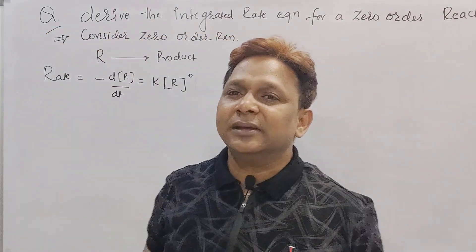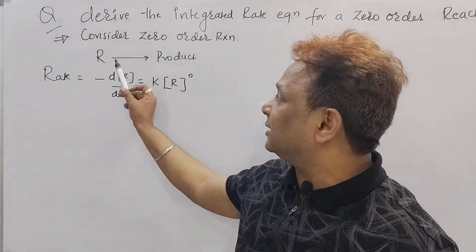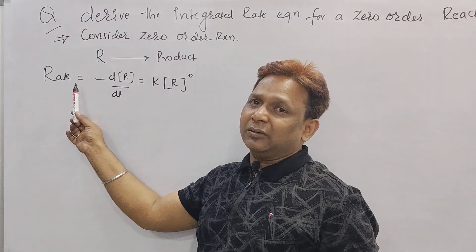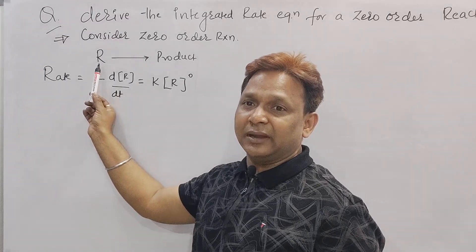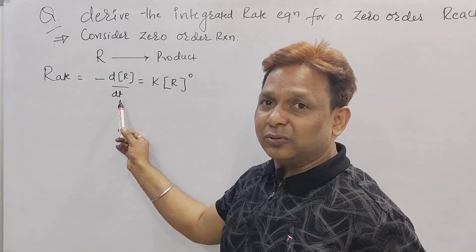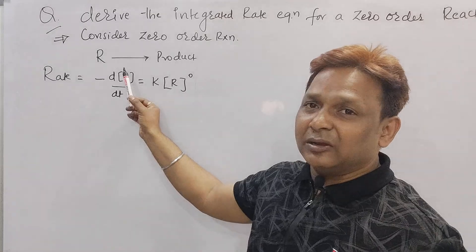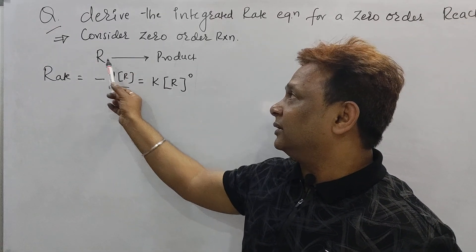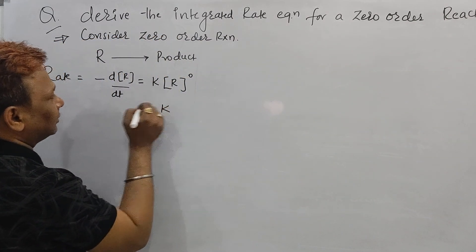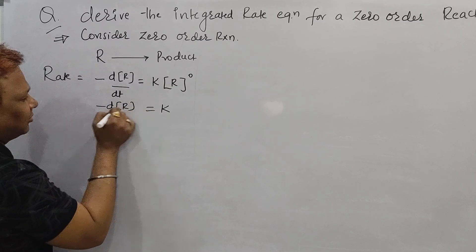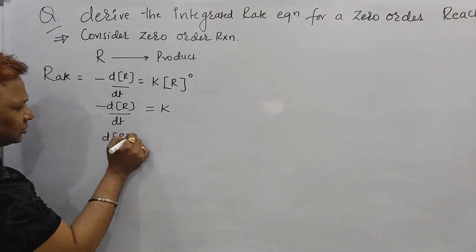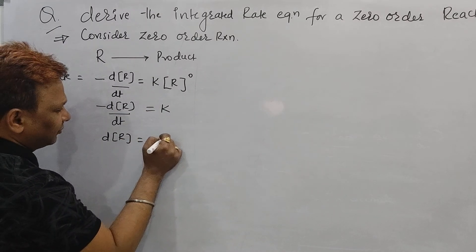So first you consider the zero order reaction — R, reactant converted into product. Write down the rate of reaction. The rate is the change in concentration of reactant, and since the reactant is decreasing, it is minus dR/dt. That equals K into concentration of R to the power of 0. Anything to the power of 0 is 1, so we get: minus d[R]/dt = K.